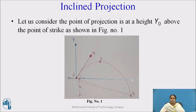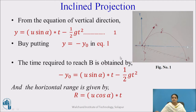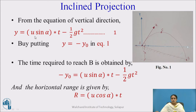In this case, we will find the velocity where the point of application and the point of strike are different. By considering the vertical direction of the inclined projectile for a same ground level, y = u·sin(α)·t − ½g·t². Here, u·sin(α)·t is the vertical component of the inclined projectile.